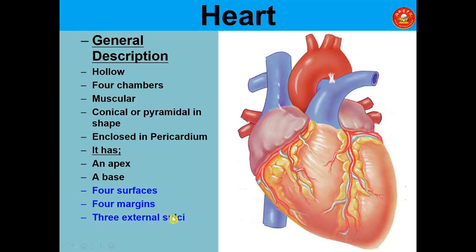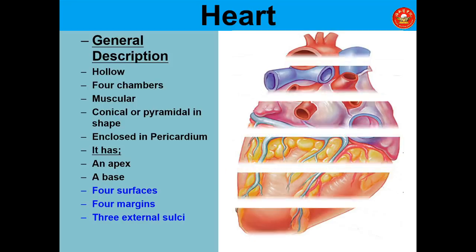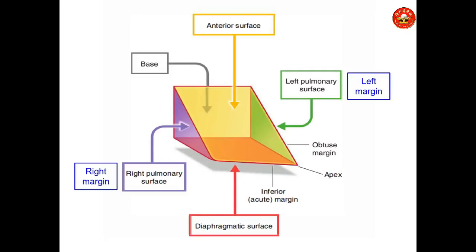There are three external sulci: the anterior interventricular, posterior interventricular, and the coronary sulcus. The posterior interventricular sulcus lies between the two ventricles. This tomography clearly shows the apex and the base. Some writers also consider the base as the posterior surface.